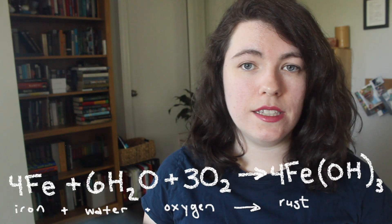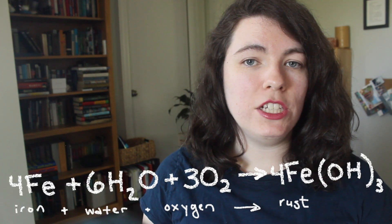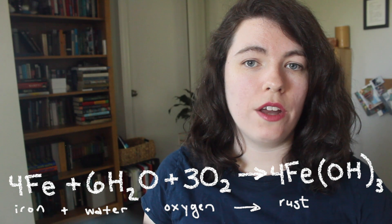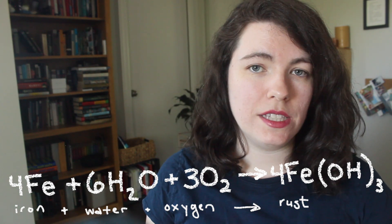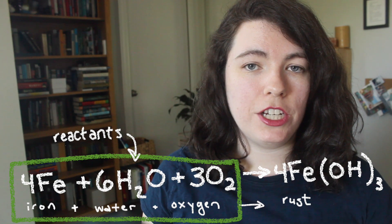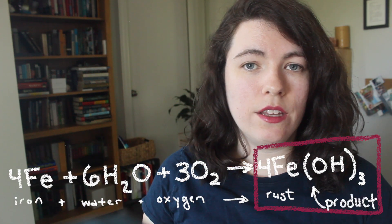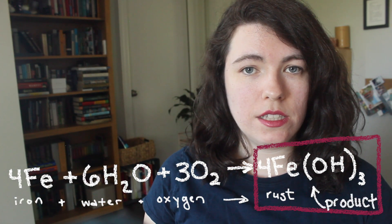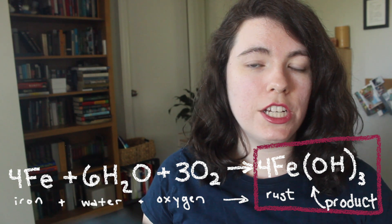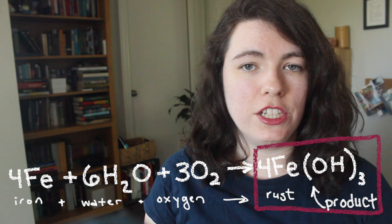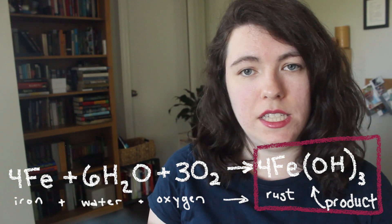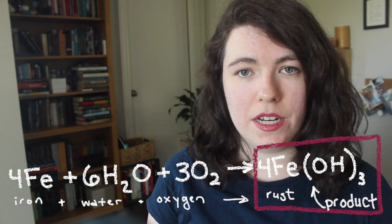We represent chemical reactions using chemical equations that look like this. Here's the chemical equation that shows iron, water, and oxygen turning into iron hydroxide, or rust. The left side of the equation shows the reactants and the right side shows the products. In this particular equation there's only one product, but we've looked at other chemical equations, like for photosynthesis and cell respiration, that have multiple products.